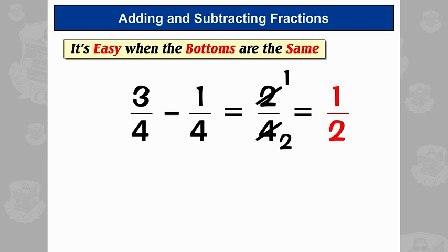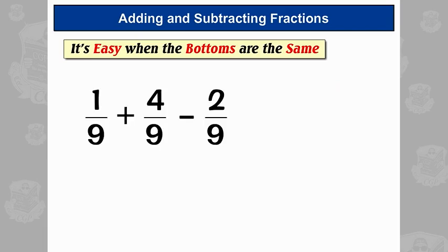Now it's exactly the same when you've got 3 fractions added or subtracted. So these are all ninths, so we can say 1 plus 4 is 5, and then take away 2 is 3, so it's 3 ninths. And then we can cancel down, top and bottom both divide by 3, so that leaves us with a third.